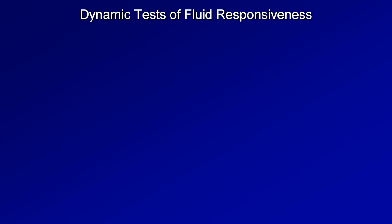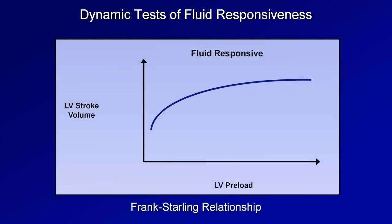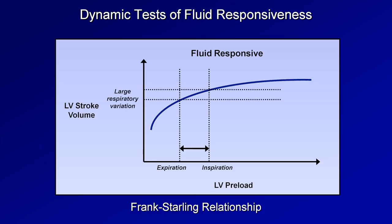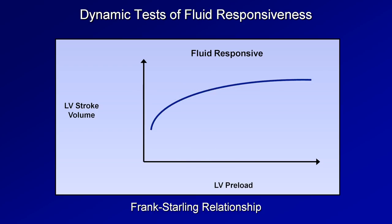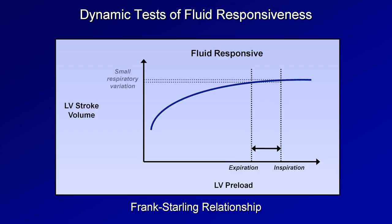To see why that's the case, we'll need to visit the Frank-Starling relationship. The most helpful version for us plots the LV stroke volume as a function of LV preload. The greater the preload — that is, the greater the amount of blood volume present in the LV at end diastole — the greater the force of contraction and thus the greater the subsequent stroke volume. However, as the preload increases higher and higher, the curve flattens out. Patients who are fluid responsive live on the steep part of the curve, where the difference in preload between expiration and inspiration results in a notable change in stroke volume. If a patient has a higher preload to begin with, living on the flat part of the curve, modest differences in preload have negligible impact on stroke volume.